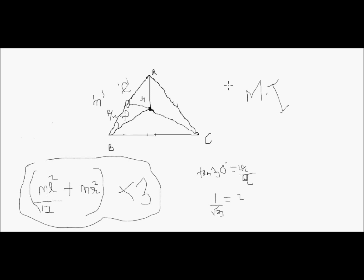The moment of inertia about the center of a rod is ml² / 12. To find the moment of inertia about the center of the equilateral triangle, we use the parallel axis theorem: ml² / 12 + mr², where r is the distance from the center of the rod to the center of the equilateral triangle. This expression is then multiplied by 3, one for each rod.